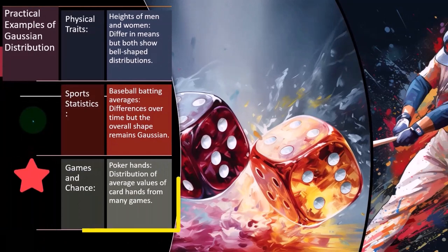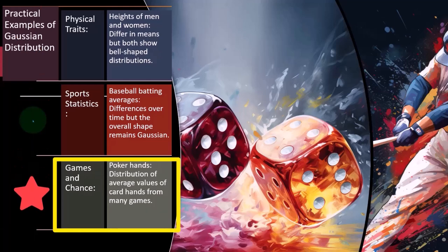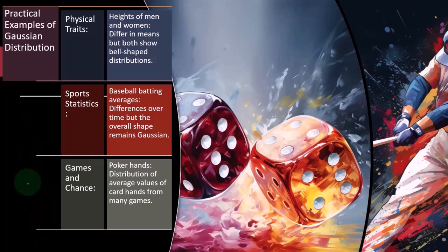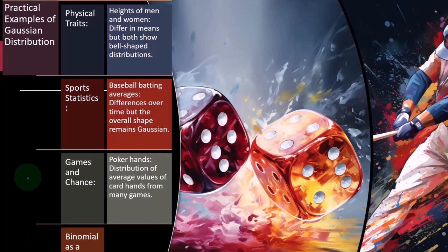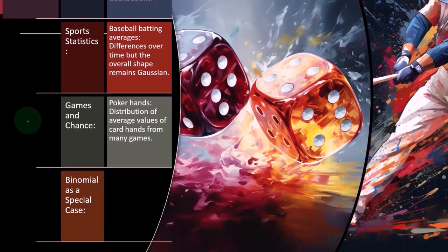Games of chance, poker hands, distributions of average values of card hands from many games. So clearly when we look at games of chance, then statistics and the normal distribution is going to play a vital role in areas there. We have the binomial as a special case.